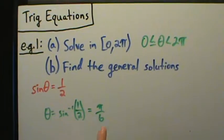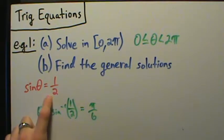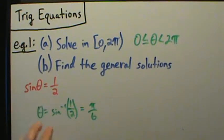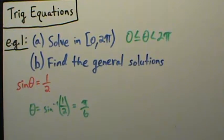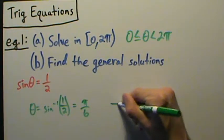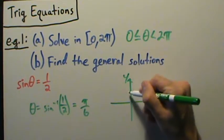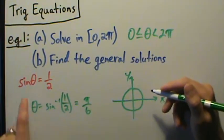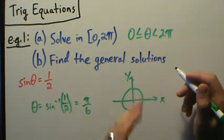π/6 is a correct answer, but it's not the entire answer, so we have to be very careful. This is one of the simplest types of equations but also a little tricky — if we just do what we're tempted to do, we're going to miss some answers. What we want to do is think about the unit circle. If we draw a unit circle, remember sine of theta equals one half — where is sine of theta positive? Sine of theta is positive if theta is in quadrant 1 or quadrant 2.